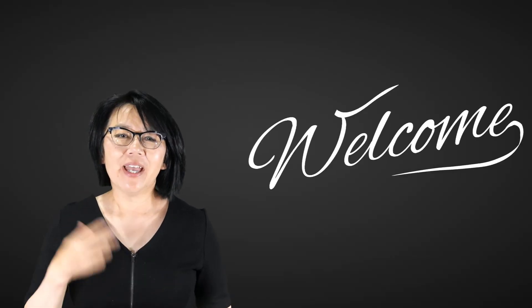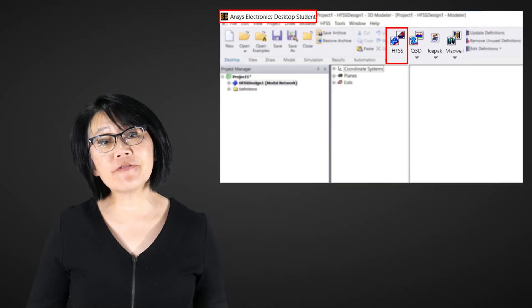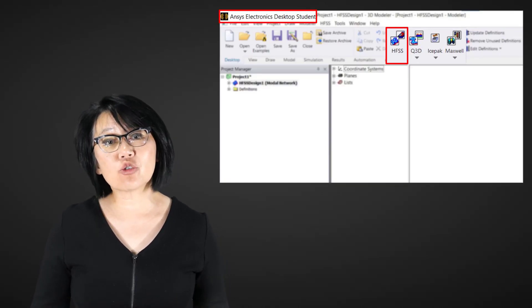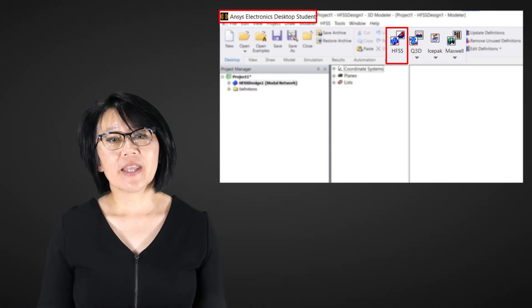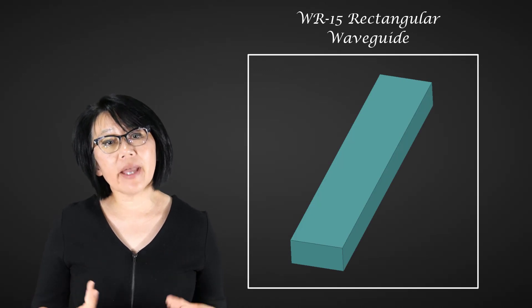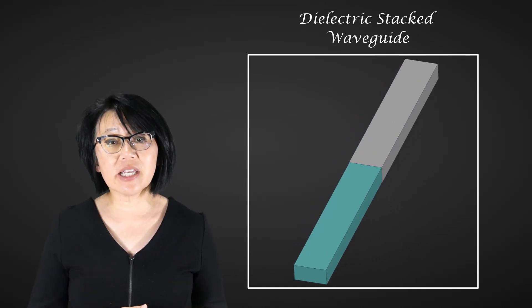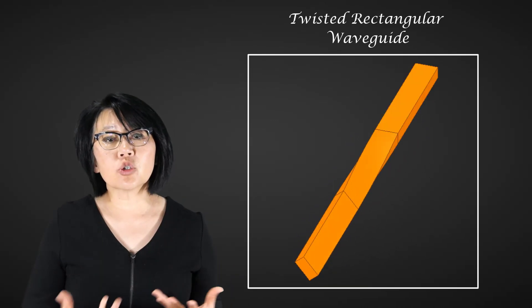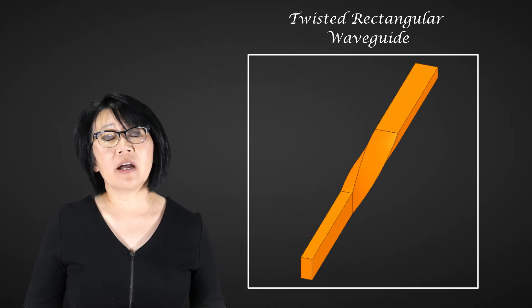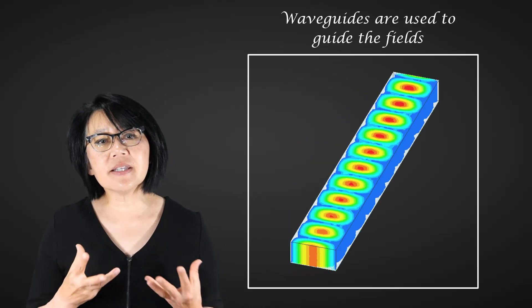Welcome to this video introducing HFSS in the student version of the ANSYS Electronics Desktop, or AEDT for short. In our previous videos we presented a simple air-filled rectangular waveguide and a dielectrically stacked rectangular waveguide. In this video we'll add a twist and a bend to that rectangular waveguide.